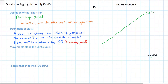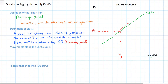So our SRAS curve looks a lot like a supply curve in microeconomics — here we have the direct relationship. As the price level rises in a country, the amount of output that firms are willing and able to supply — indicated by Y, which stands for national income — will increase. There is a direct relationship between the average price level of goods and services and the quantity of goods and services produced by a nation's firms.